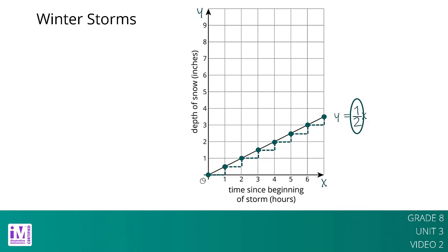During a mid-winter storm, the snow again fell at a rate of 1 half inch per hour, but this time there was already 5 inches of snow on the ground. We can graph this storm on the same axes as the first storm by taking all the points on the graph of the first storm and translating them up 5 inches.